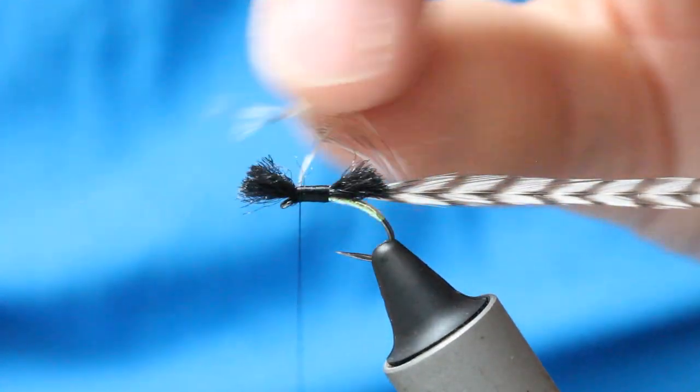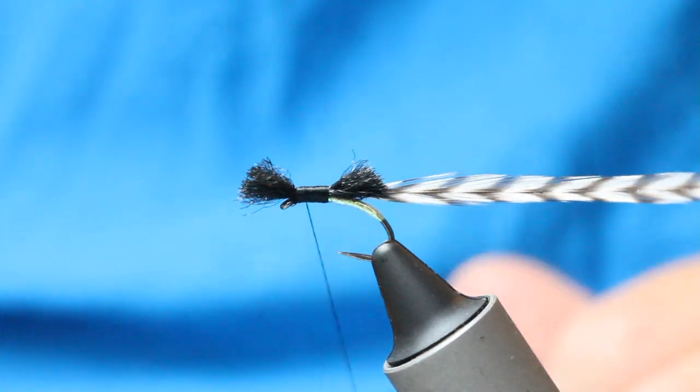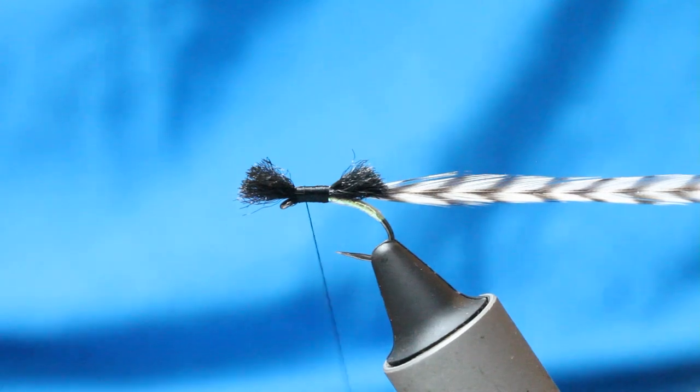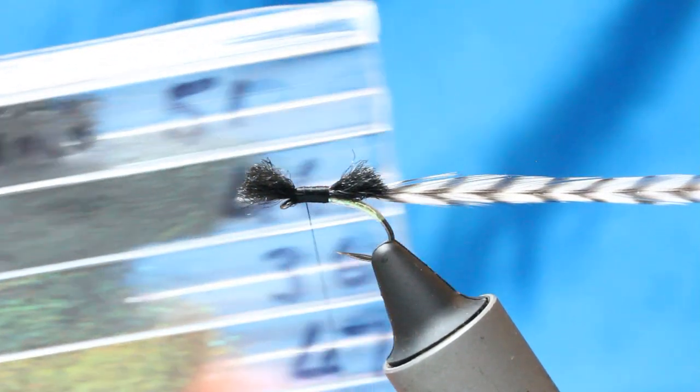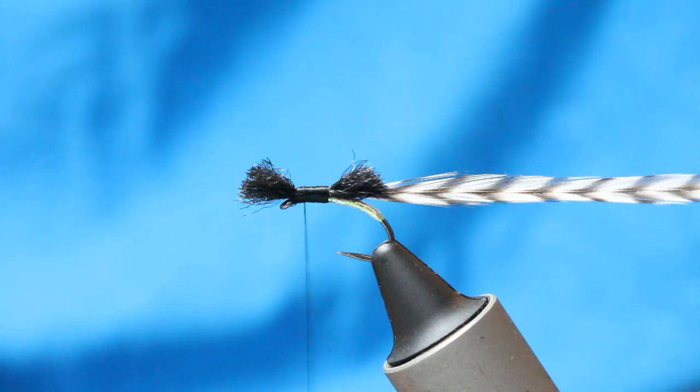Then with the scissors, take that back to there. You can do this with your fingers actually because the hackles out long. Then I've got a Solargy 51. It's just a black synthetic. Get away with seals fur. I just like this black synthetic stuff.